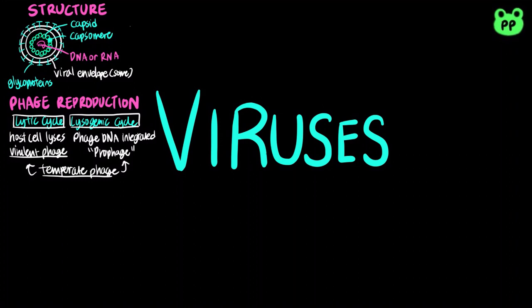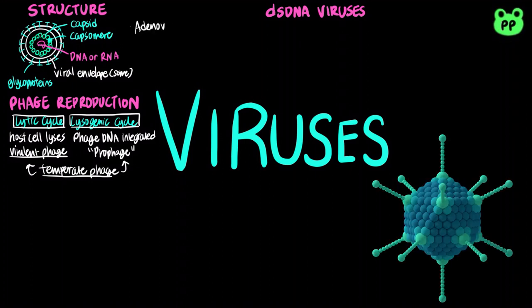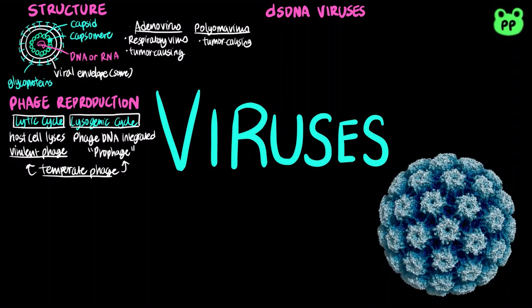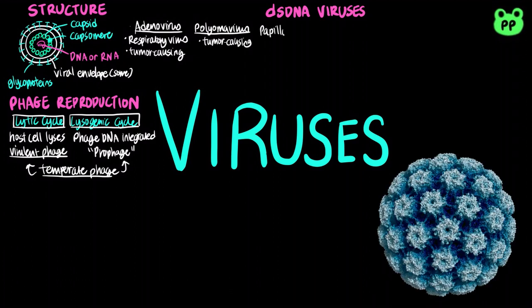There are six main classes of animal viruses. The first class contains double-stranded DNA, including adenoviruses. Many of them cause respiratory diseases, while others lead to formation of tumors. Polyoma virus may also lead to tumor formation. Certain types of human papilloma virus, or HPV, cause warts, while other types may lead to cervical cancer.